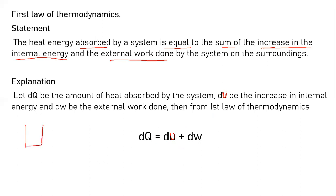Let us consider a thermodynamic system: a cylinder with a piston containing an ideal gas under pressure. When the piston moves, work is done. If the piston moves outward, work is done by the system on the surrounding — that is positive work.